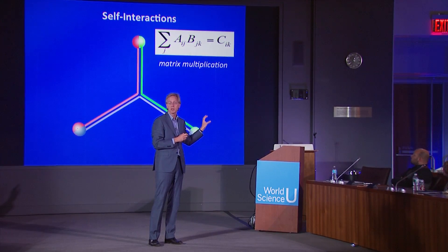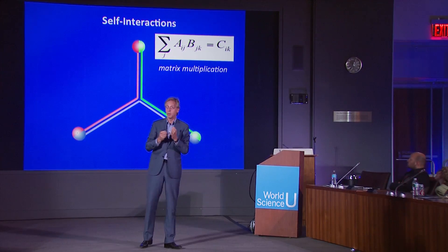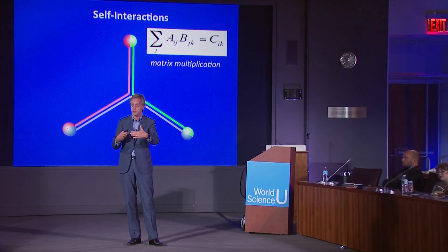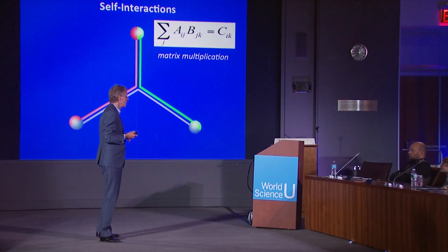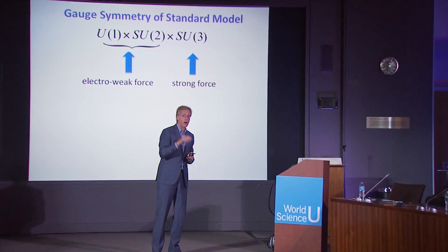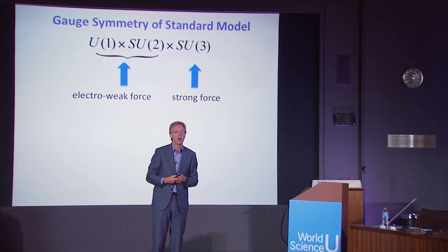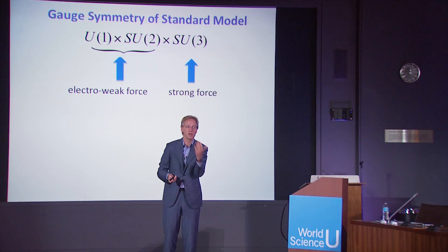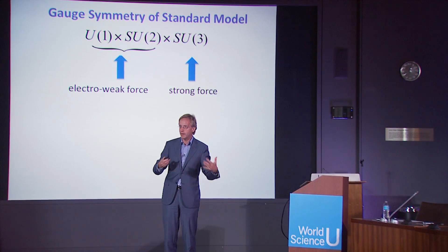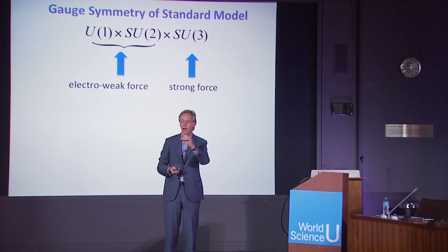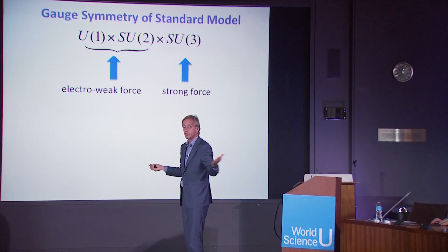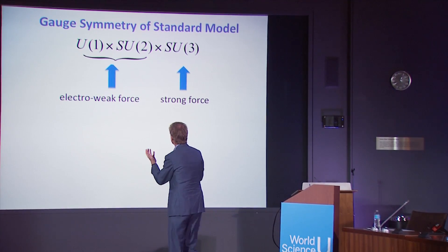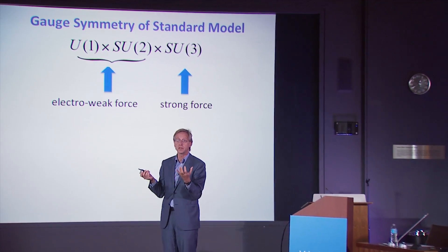The self-interactions of gluons are given by a very clean mathematical rule — matrix multiplication, the theory of linear algebra and group theory — that describes the interactions of the force-carrying particles. The only thing you have to know about the standard model, if you're a theorist, is: give me the symmetry group. And after a painstaking series of experiments and decades of struggle, we came to this final line, the little formula: the symmetry of the standard model is U(1) × SU(2) × SU(3). It's a telegraphic shorthand for the entire content of the standard model.